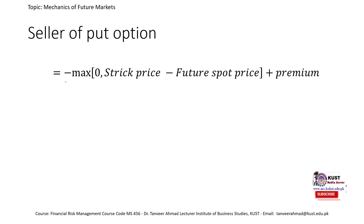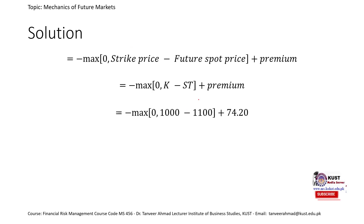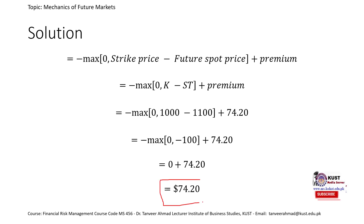The formula for the seller of the put option is: negative of the maximum of (strike price minus future spot price), plus the premium — because the seller is selling the right and receiving the premium. Using the same example with strike price 1000, premium 74.2, and future spot price at expiration of 1100, the profit works out to 74.20.